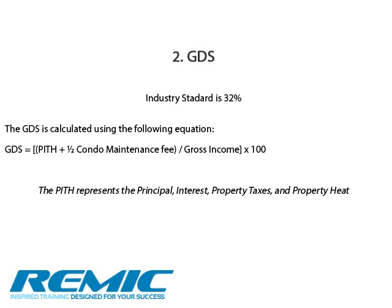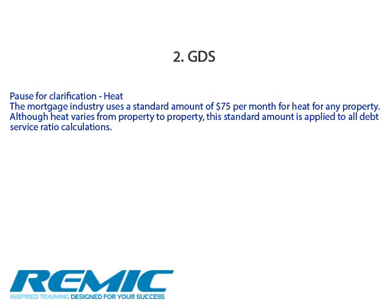Section 2: Gross Debt Service, or GDS. The GDS is designed to determine if the potential borrower can afford the proposed mortgage payment based upon their income, or combined income if there is more than one applicant. The GDS combines the cost that a potential borrower has regarding shelter and divides that cost by his or her gross income. The GDS is calculated using the following equation: GDS equals PITH plus 1.5 times condo maintenance fees, divided by the gross income, then multiplied by 100. PITH represents principal, interest, property taxes, and property heat. It is important to note that when calculating heating costs, the mortgage industry uses a standard amount of $75 per month for heat on any property. This is a standard amount applied to all debt service ratio calculations.